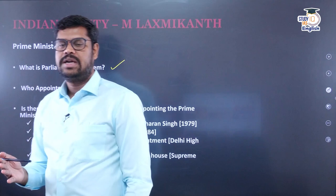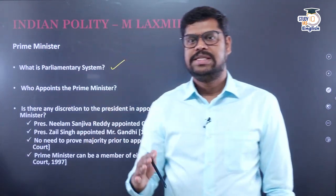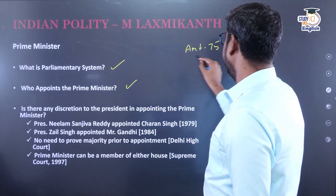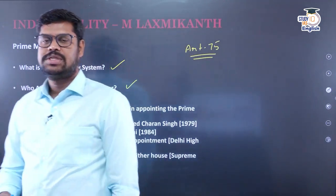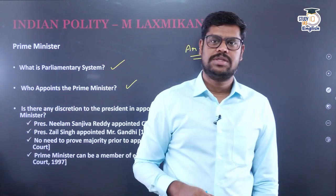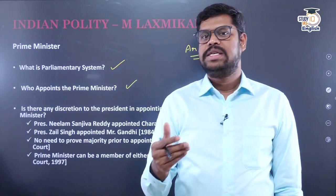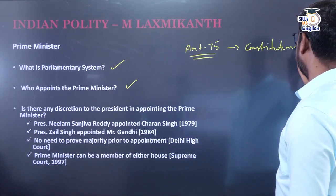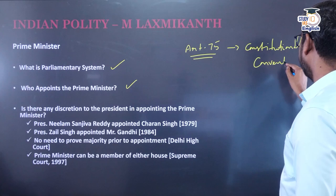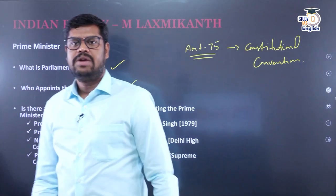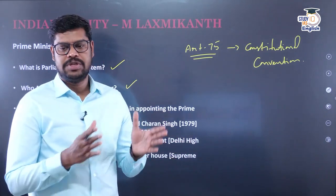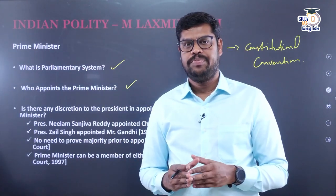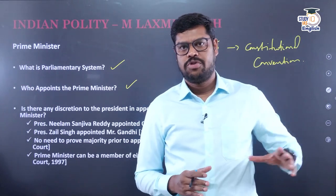Article 75 of the Constitution categorically says that the Prime Minister shall be appointed by the President. However, there is no constitutional direction as to who shall be appointed as Prime Minister — nothing is explicitly given. What we follow is only a constitutional convention: the leader of the majority party is appointed as the Prime Minister. If no party has the majority, the leader of the largest coalition is appointed.